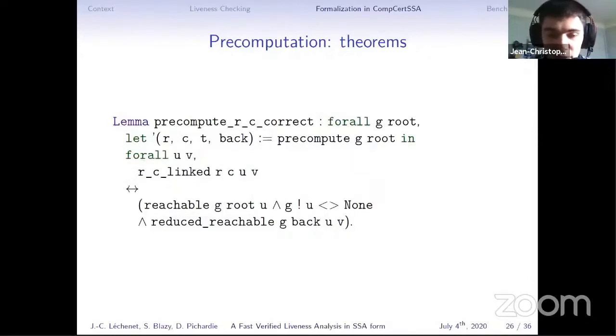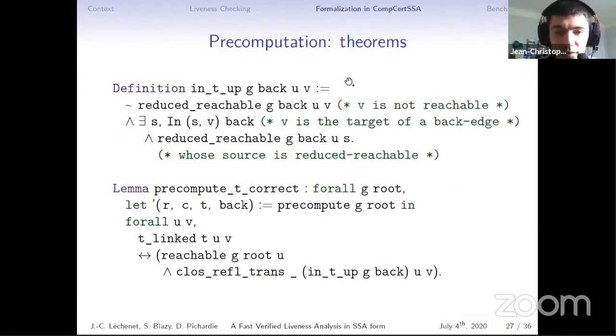We have two main theorems for this precomputation part. The first one states that our R and C correctly captures retros reachability information. So here we say that U and V are related using R and C if and only if V is retros reachable from U. And we have two technical assumptions that U is reachable from entry and U is in the graph, but basically the idea is there. And here is a theorem for T. I won't detail, but here is just the translation of the definition of T_row into Coq. And then we show that U and V are related using T if and only if they're related using the reflexive and transitive closure of T_row, that is T.